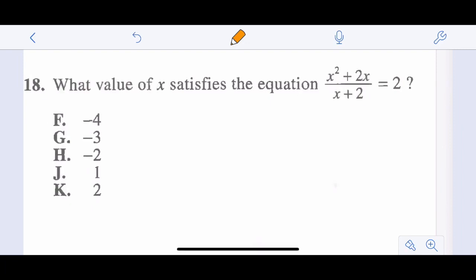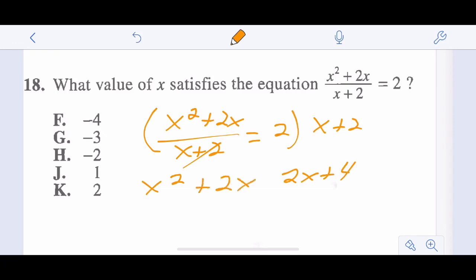But if you did want to work it out algebraically, so we have x squared plus 2x over x plus 2 equals 2. We're going to multiply both sides by x plus 2. This side would cancel and this side is going to end up being 2x plus 4. Over here we have x squared plus 2x, and then we combine our like terms. Subtract 2x minus 2x. Now we have x squared equals 4. Take the square root of both sides. We get x equals 2. Whichever way is the fastest way for you to get the correct answer is the correct way to work that problem.